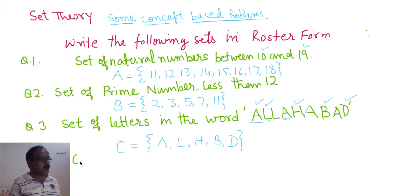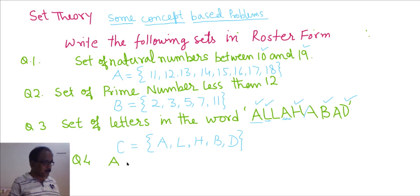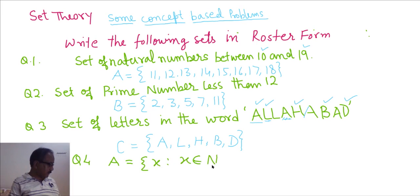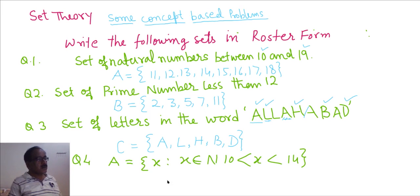We take another problem, that is problem number 4. Suppose there is a set A = { X such that X belongs to N (N means natural number) and X lies between 10 and 40 }. This set is represented in set builder form. We have to convert this set builder form into roster form.